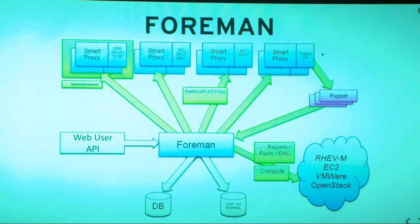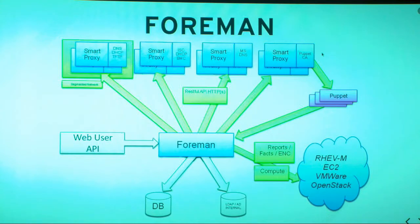The next module is Puppet. We have this feature called ENC. What ENC does is it tells Foreman: hey, I have this node, I need to configure it, tell me what to do with it. Foreman gives all the configurations to the Puppet ENC, and ENC takes care of the implementation. We also have compute resources — Foreman can spin up AWS, LibVirt, or OpenStack machines for you, so we have a lot of compute resources for provisioning.